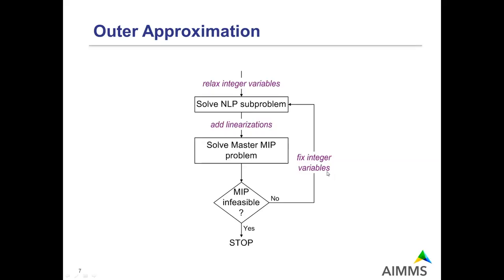This is not completely correct yet because the algorithm would always cycle, finding the same integer solution repeatedly. For that reason, the algorithm adds integer elimination constraints, which eliminate the integer solution found in the previous iteration. In AIMMS, there is an iteration limit of 20, so it will stop when one of the MIPs is infeasible or the iteration limit is reached.